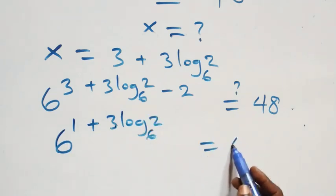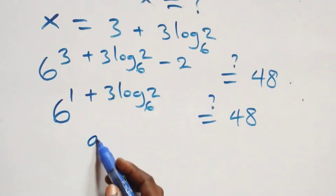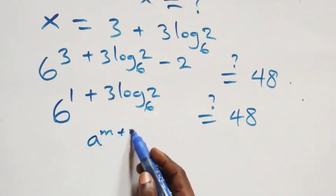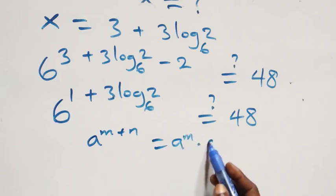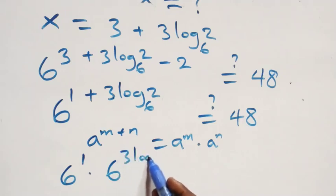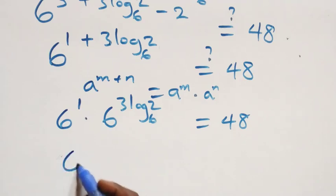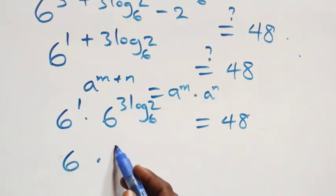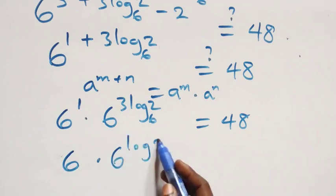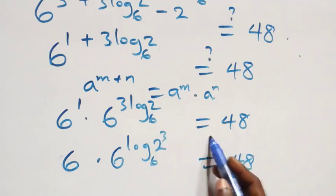This follows from the law of indices: a raised to power one plus n is the same as a raised to power one times a raised to power n. Separating this, we have six raised to power one times six raised to power three log base six of two equals forty-eight. And six raised to power one is just six, so we have six times six raised to power log base six of two cubed, which is six times six raised to power log base six of eight, equals forty-eight.